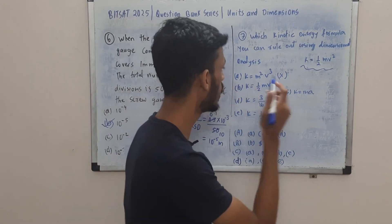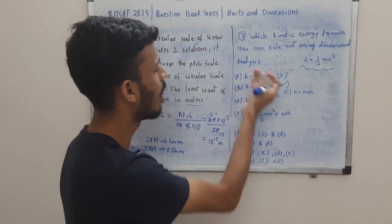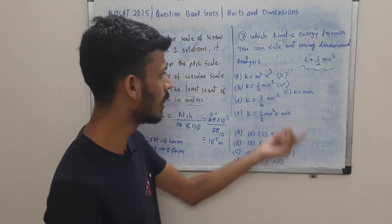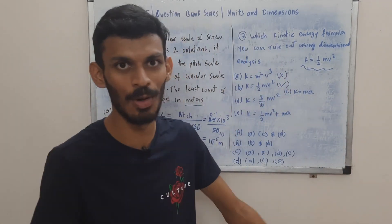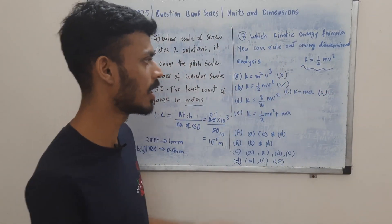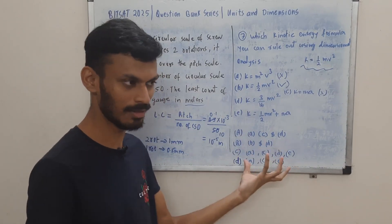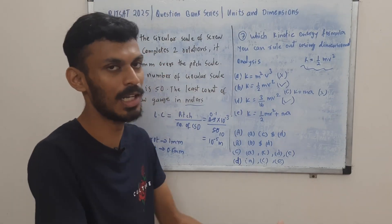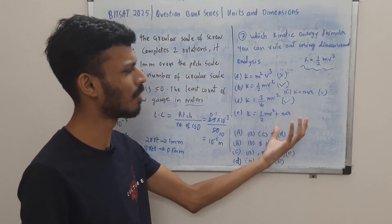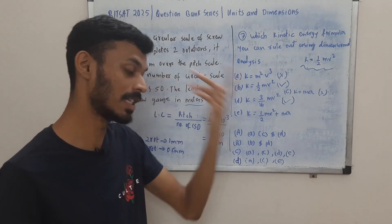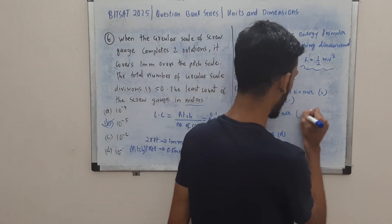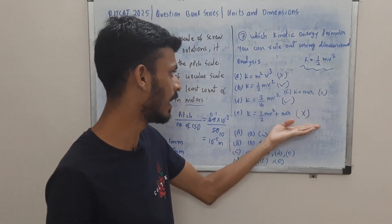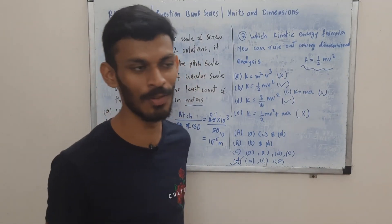The second expression is ½mv² — perfectly correct, it matches the form. The third expression is ma — that is force, and force and energy don't have the same dimensions, so incorrect. The fourth expression is (3/16)mv² — the constant doesn't matter for dimensional analysis; it is of the form mv² and dimensionally correct. The fifth expression adds something of the form of energy to something of the form of force — you cannot add quantities with different dimensions, so it is dimensionally inconsistent. Therefore we rule out A, C, and E — option D.